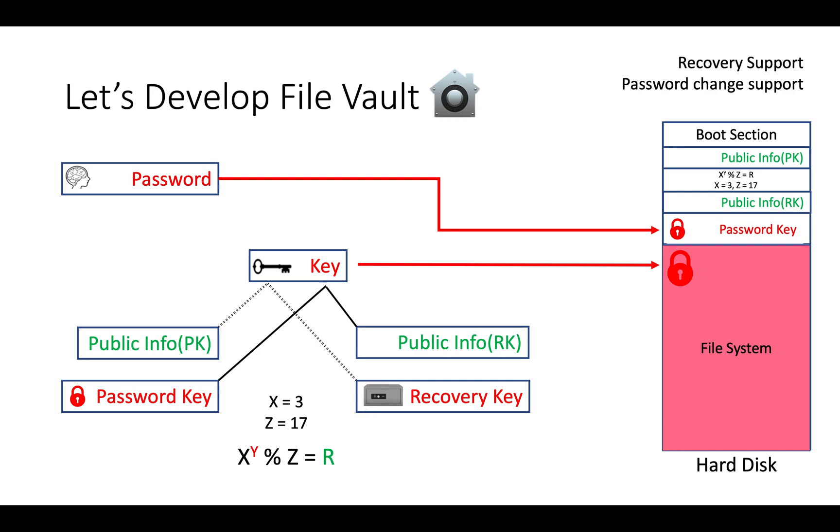If user has to change password, then need to re-encrypt password key only. That's it. Now our password change is very quick. This method can be improved further, but I am leaving it to you. The conclusion is, using Diffie-Hellman formula, we can solve various security related problems as well. Actual file system or actual file vault may vary and involve various combinations of formulas to achieve strong security. This is about file vault basics with support of recovery key and password change.